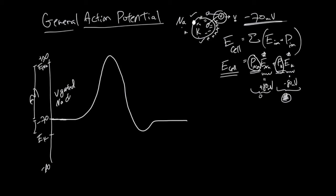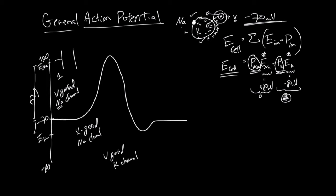Let's understand the players. Voltage-gated Na channel. You also have a stimulation-gated Na channel. And voltage-gated potassium channel. So the voltage-gated Na channel — there's only one type, and this is how it looks. Here's the membrane; this is the outside of the cell, this is the inside. You have more Na outside than inside, so things want to go in. But this channel has two gates: this one called the M gate, and this one called the H gate. These two gates behave differently.